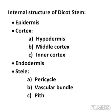Next is the endodermis — the innermost layer of cortex. It consists of a single layer of barrel-shaped cells. These cells contain starch grains, and hence endodermis is also called the starch sheath.